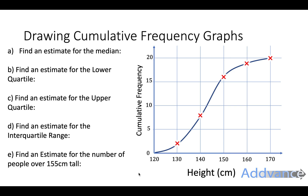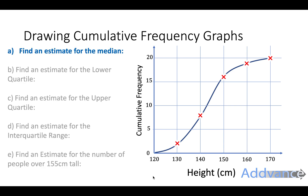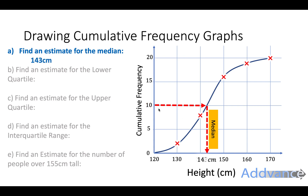From this graph we can find some important information. We're going to find an estimate for the median, lower quartile, upper quartile, interquartile range, and the number of people over 155 centimetres tall. Starting with the median — the middle number — there are 20 people in total so the middle is at 10. We go across from 10 to the curve, then down, and read off the bottom. The median is 143 centimetres.